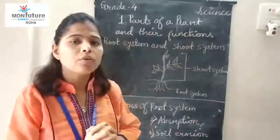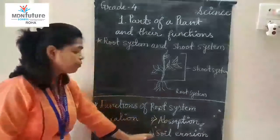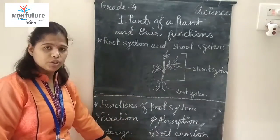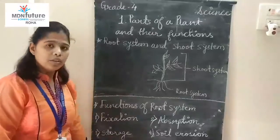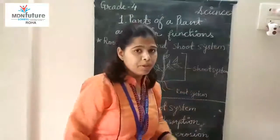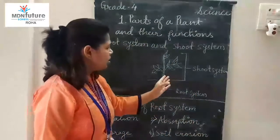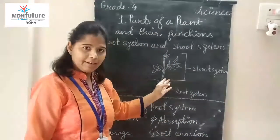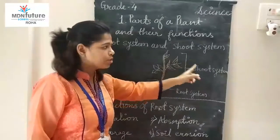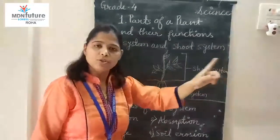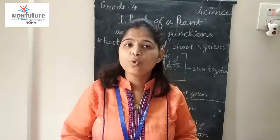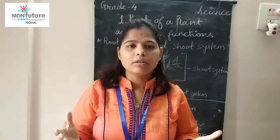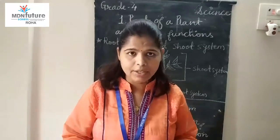Students, these are the four important functions of the root system. Now we will move on to the shoot system. The part of the plant that grows above the soil is called the shoot system. The shoot system mainly consists of stem, flower, fruit, leaf, and seed.